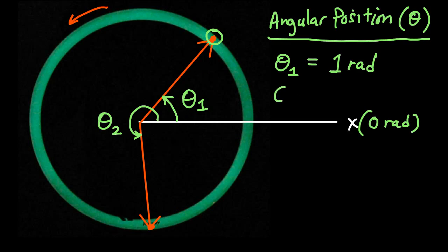Our position, our angular position, theta 2, at a later time is, we'll call it roughly about 5 radians.